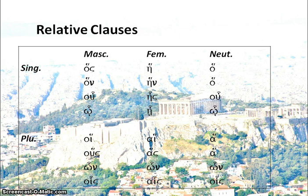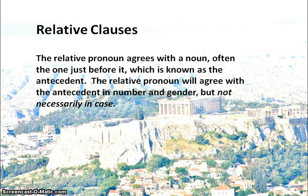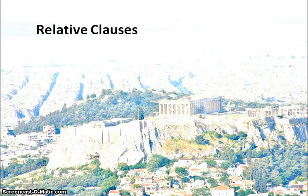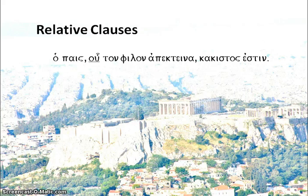Also note that ho in the neuter nominative and accusative singular is the same as the nominative masculine singular of the definite article, but that's hopefully not too concerning. The relative pronoun will agree with a noun — often the one just before it — which we call the antecedent. It will agree with the antecedent in number and gender, but not necessarily in case. So in our example, hos ('who') is both masculine and singular because it is agreeing with 'the boy', who is also masculine and singular.